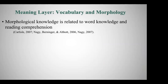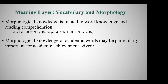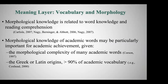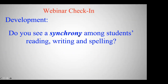Here's a bit of the research: morphological knowledge is related to word knowledge and comprehension. My colleague Diana Townsend does great work in these areas. Morphological knowledge of academic words is particularly important for academic achievement — over 90% of academic vocabulary has Greek or Latin origins. Do you see a synchrony among your students in their reading, writing, and spelling? If you don't see it, I'm interested in why. It does occur occasionally that reading and spelling diverge, but most of the time we do see a match.